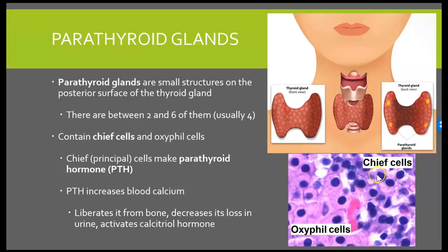Our chief cells are going to be responsible for making the parathyroid hormone. Remember that parathyroid hormone will help increase blood calcium. They can do that by going through resorption of our bone — basically breaking the bone apart in order to get that calcium out. We can also decrease calcium's loss in the urine by reabsorbing it in the kidneys, and we can also activate calcitriol hormone.